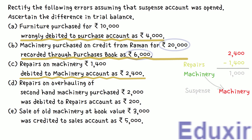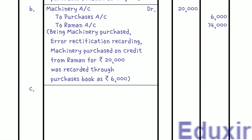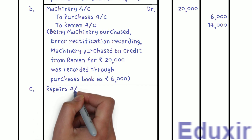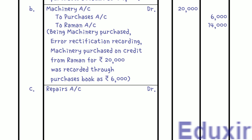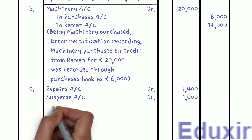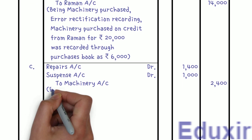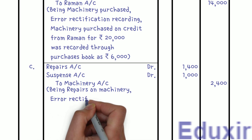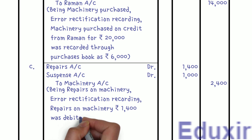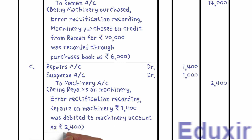Entry 3: Repairs Account Dr. 1,400 rupees; Suspense Account Dr. 1,000 rupees; Machinery Account Cr. 2,400 rupees. Narration: Repairs on machinery — 1,400 rupees was debited to machinery account as 2,400 rupees — Error Rectification Recording.